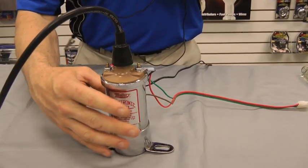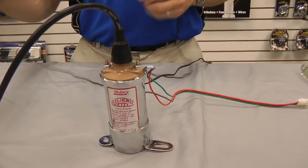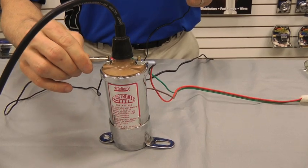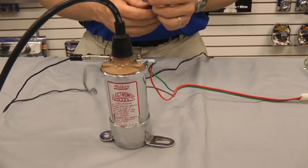So the first thing you want to do with your coil is you want to take your jumper wire and you want to attach it to the negative post on the coil.